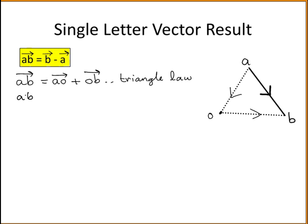Then AB is equal to, instead of writing the vector AO, we want to write the vector OA, but when you change the direction of a vector, you must also change its sign, so that's minus, plus OB, and that's just from the definition of a negative vector.